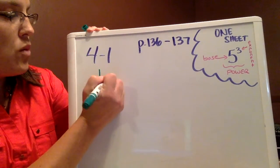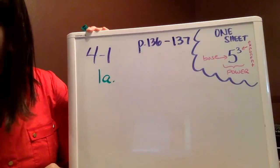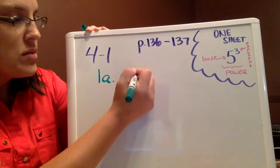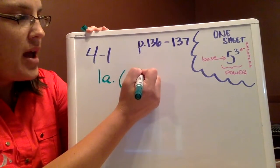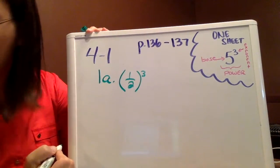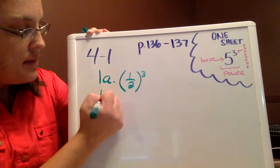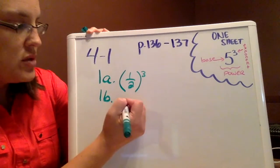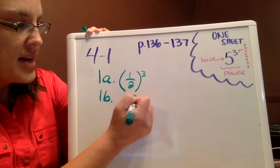I'm going to look at 1a. 1a has three one-halves that are being multiplied, so I'm going to rewrite that as one-half to the third power. For 1b, we have five x's being multiplied, so we're going to rewrite that as x to the fifth.